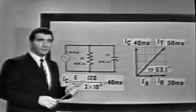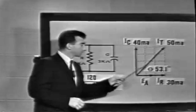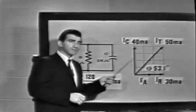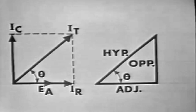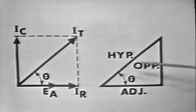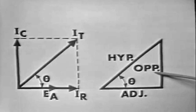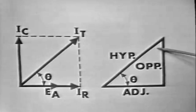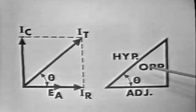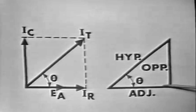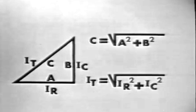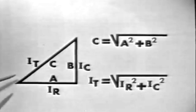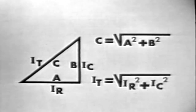First we find the current in each branch and draw vectors showing their values and phase relationships. Before solving the problem, let's relate the vector representation to the familiar right triangle. IR corresponds to the adjacent side, IC corresponds to the opposite side, and IT equals the hypotenuse of the triangle. Since the circuit currents are closely related to the sides of the triangle, the same geometric theorems can be applied. Therefore, IT equals the square root of IR squared plus IC squared — the Pythagorean theorem — which is much more accurate than measuring the vector on a graph.